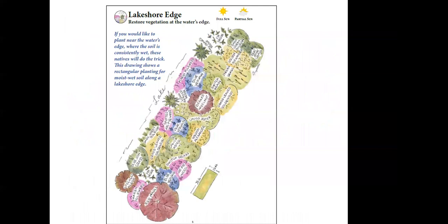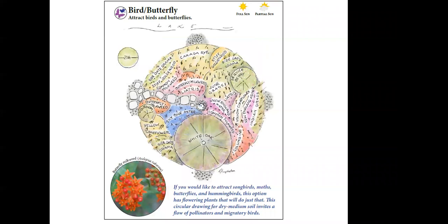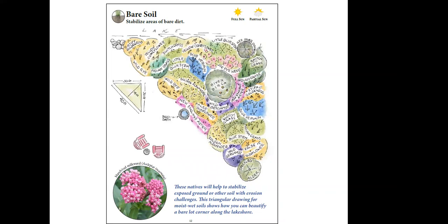Here's the lakeshore edge option with a graphic illustration of how you can put these beds into play on your own shoreline, showing ideas about how you can lay these plants out. Here's the bird and butterfly option, made more into a circle planting with a white oak acting as an anchor and other plants put around it — meant to support migratory birds and our pollinators. Here's the bare soil erosion control type scenario where we have fibrous root system plants that do the heavy lifting of stabilizing the shoreline area.